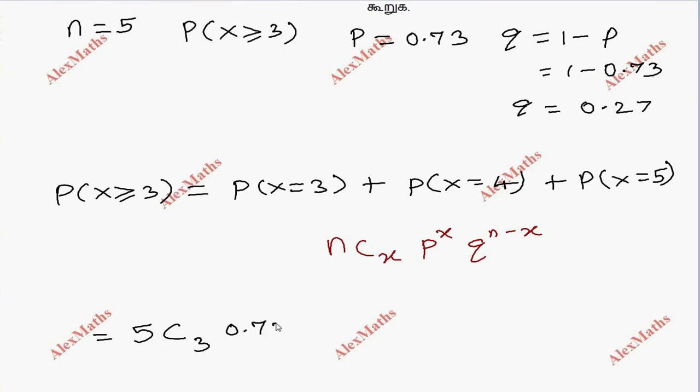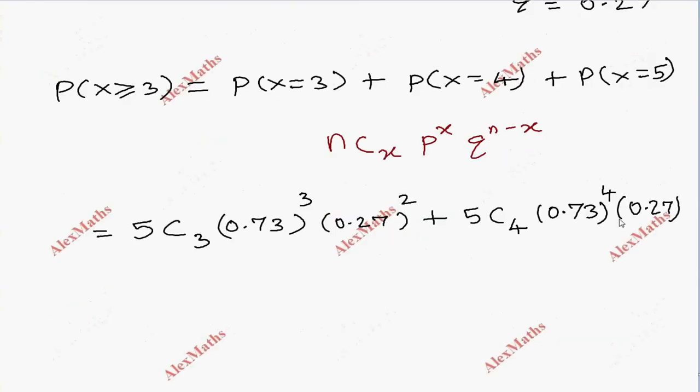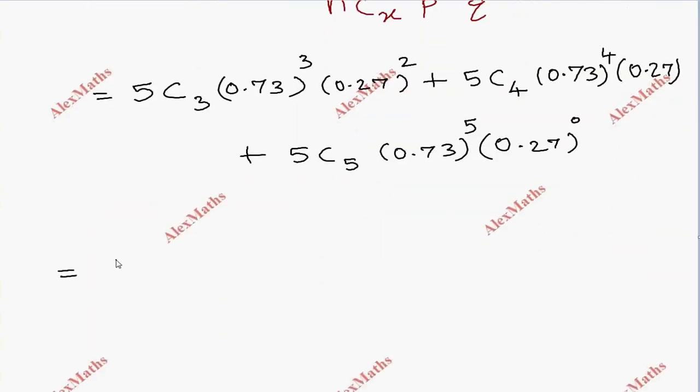This equals 5C3 times 0.73 to the power 3 times 0.27 to the power 2, plus 5C4 times 0.73 to the power 4 times 0.27 to the power 1, plus 5C5 times 0.73 to the power 5 times 0.27 to the power 0. Now 5C3 equals 5 times 4 times 3 divided by 1 times 2 times 3.